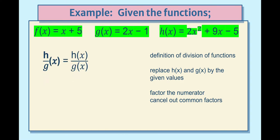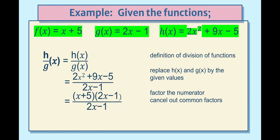For division, (h / g)(x) = h(x) / g(x) by definition. Replace h(x) with 2x² + 9x − 5 and g(x) with 2x − 1. Since the numerator is factorable, factor it as (2x − 1)(x + 5). Cancel the common factor (2x − 1). Therefore, the quotient is x + 5.